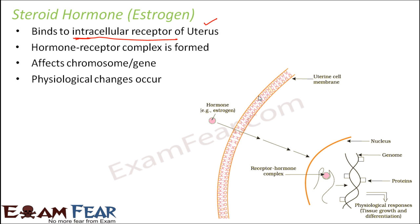This is the uterus cell membrane, and on the cell membrane you do not have any receptors — the receptor is present inside. The hormone-receptor complex is formed inside, and it enters inside the nucleus where you have the chromosomes and the genes, and then it directly affects the genes. When it affects the genes, the chromosome sequence changes, resulting in genetic changes and physiological responses in the form of tissue growth and differentiation. That is how growth of the uterus takes place — one of the functions of estrogen is to help in growth and development of all the female sexual organs.